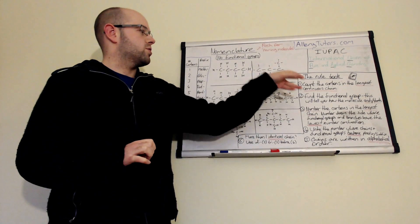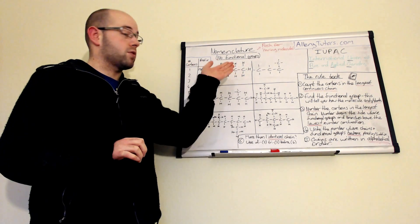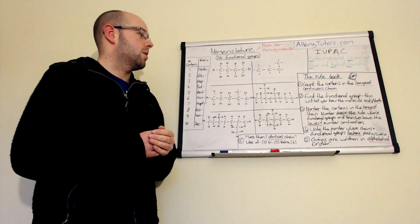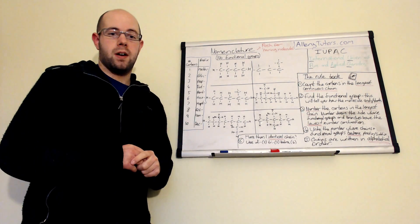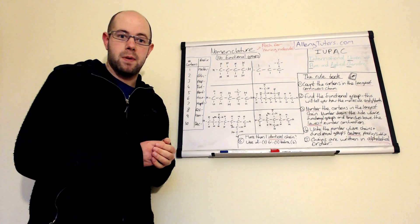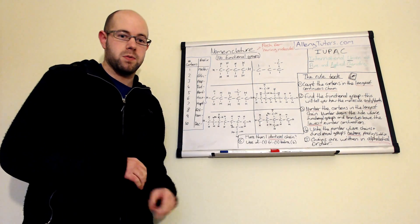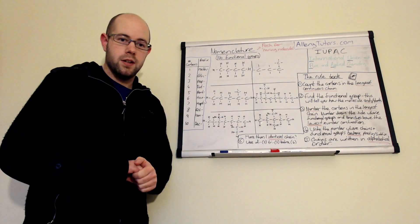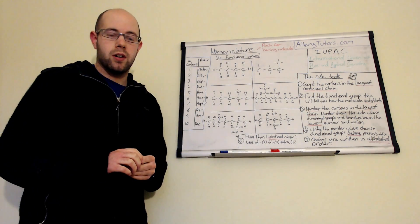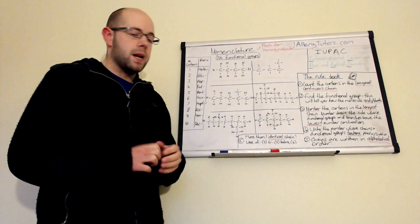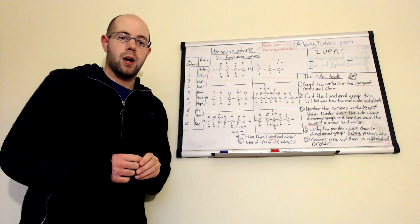The first thing you should do is count the carbons in the longest continuous chain. When you get a hydrocarbon molecule, that's the first thing - count the carbons. You're then going to find the functional group if there is one, and make sure you name it properly - but in this case we don't have any functional groups. Once we've done that, we then have to number the carbons in the longest chain and make sure that any branches in the molecule have the lowest number combination.